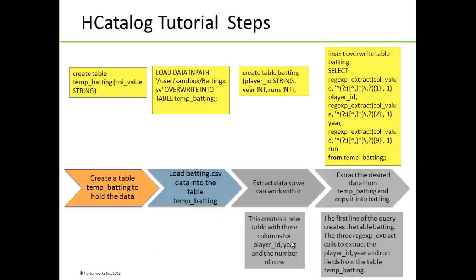The following is a sequence diagram of exactly how we're going to accomplish this tutorial. First, we're going to create a table called tempBatting to hold the data. Second, we're going to load the batting CSV data into the table tempBatting. Then we're going to extract the data so we can work with it — this extraction creates a new table with three columns for player ID, year, and the number of runs. We then extract the desired data from tempBatting and copy it into batting. Note that the first line of the query creates the table batting, and the three regexp_extract calls are used to extract the player ID, year, and run fields from tempBatting.